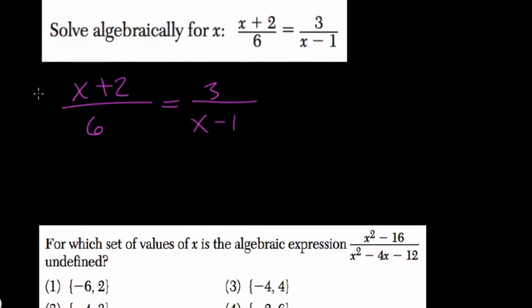We'll multiply both sides by 6 to start off. Let's cancel out. x plus 2 equals 18 over x minus 1.